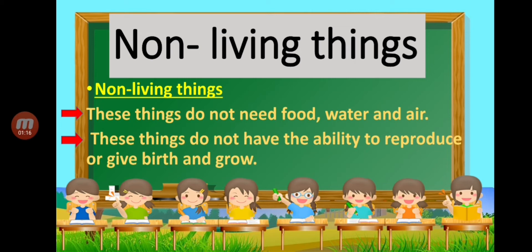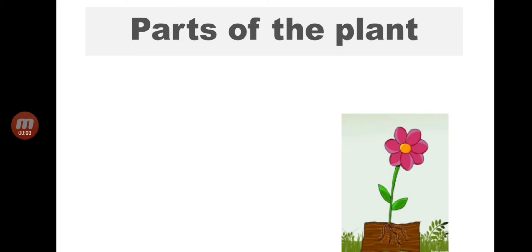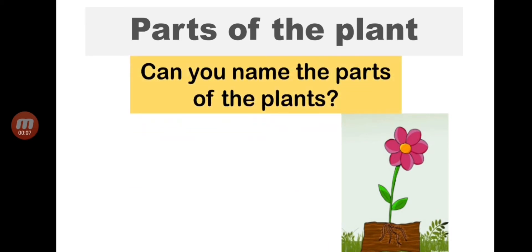That is non-living things. This time we are going to talk about parts of the plant. Can you name the parts of the plant? Number one is roots. Roots help the plant to stand, and roots also take water from the soil going to the stem.